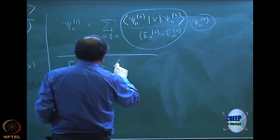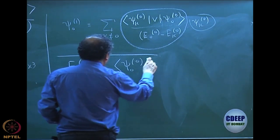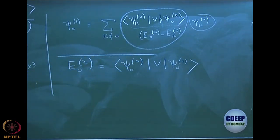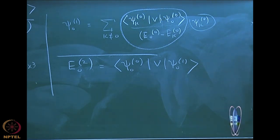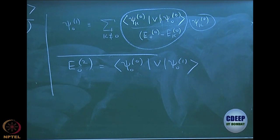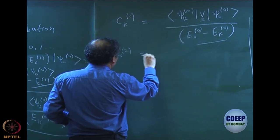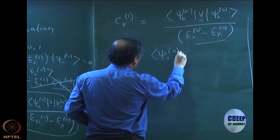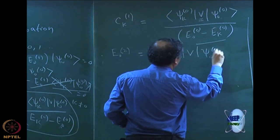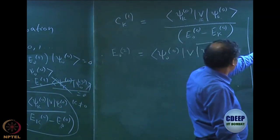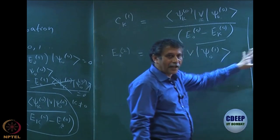Having done this, I can go back to E02. Remember my E02 was written as ⟨ψ00 | V | ψ01⟩. Just as E01 was ⟨ψ00 | V | ψ00⟩, and generally E0N is ⟨ψ00 | V | ψ0,N-1⟩. So for E02 it is ⟨ψ00 | V | ψ01⟩. All I need to do is to expand ψ01 as I have done and push it into this expression.